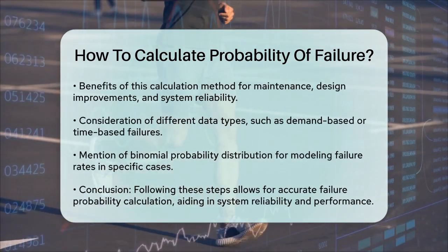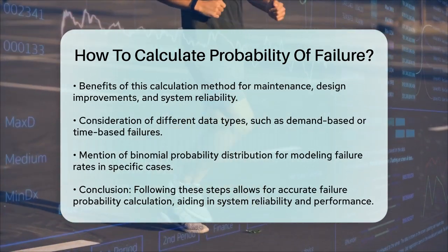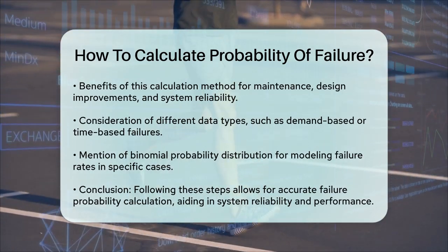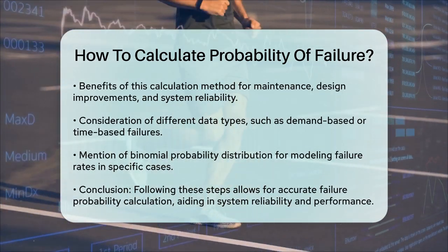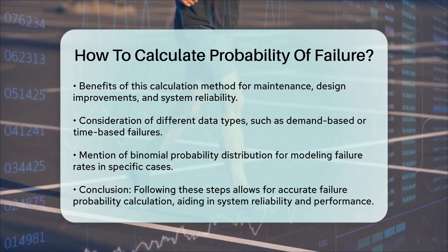In some cases, you might need to consider different types of data, such as demand-based or time-based failures. For instance, if you're dealing with items that fail on demand, like a starter solenoid, you might use a binomial probability distribution to model the failure rate.